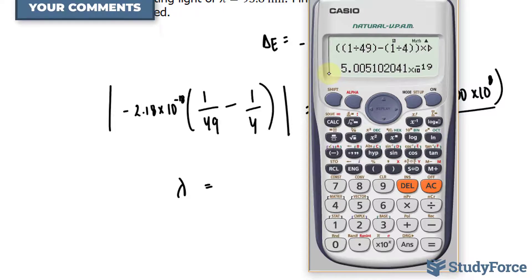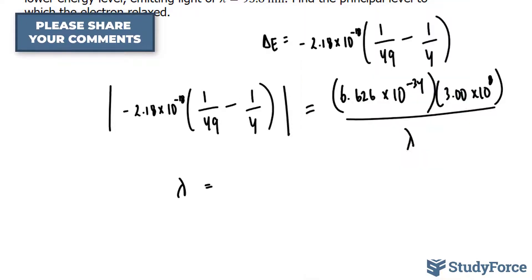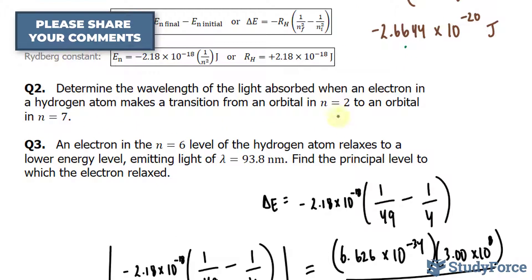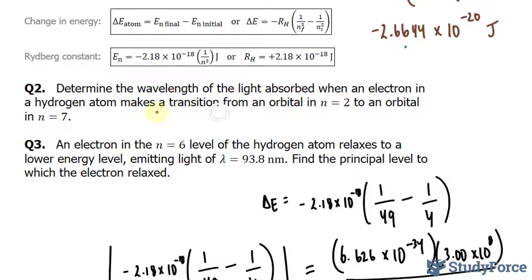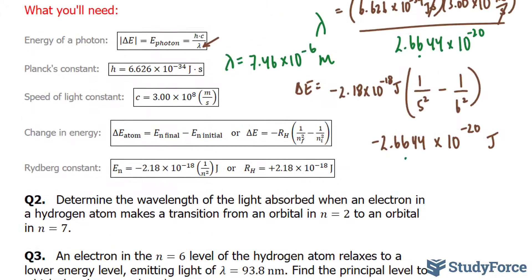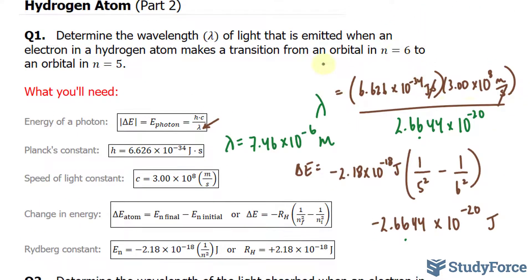Also notice that the number we get is positive. And the reason for that is because, taking a look at the question, we go from an orbital level that's smaller than the final. Whereas in question number 1, it was the opposite. We went from 6 to 5.